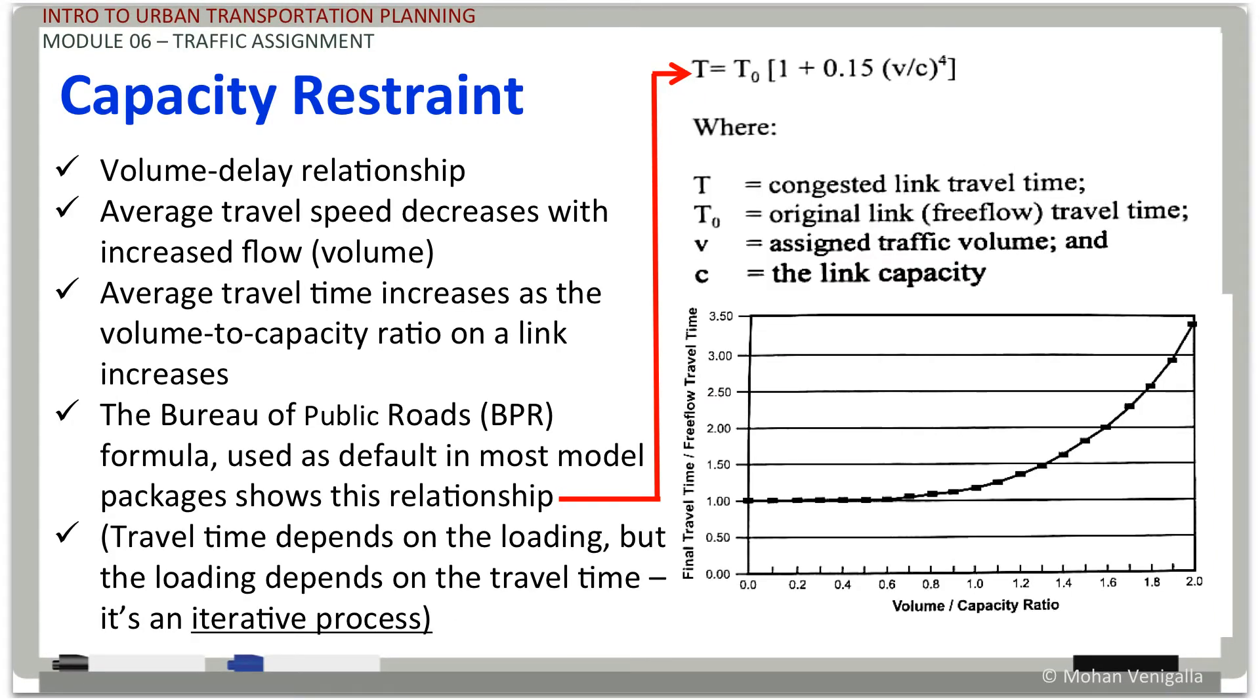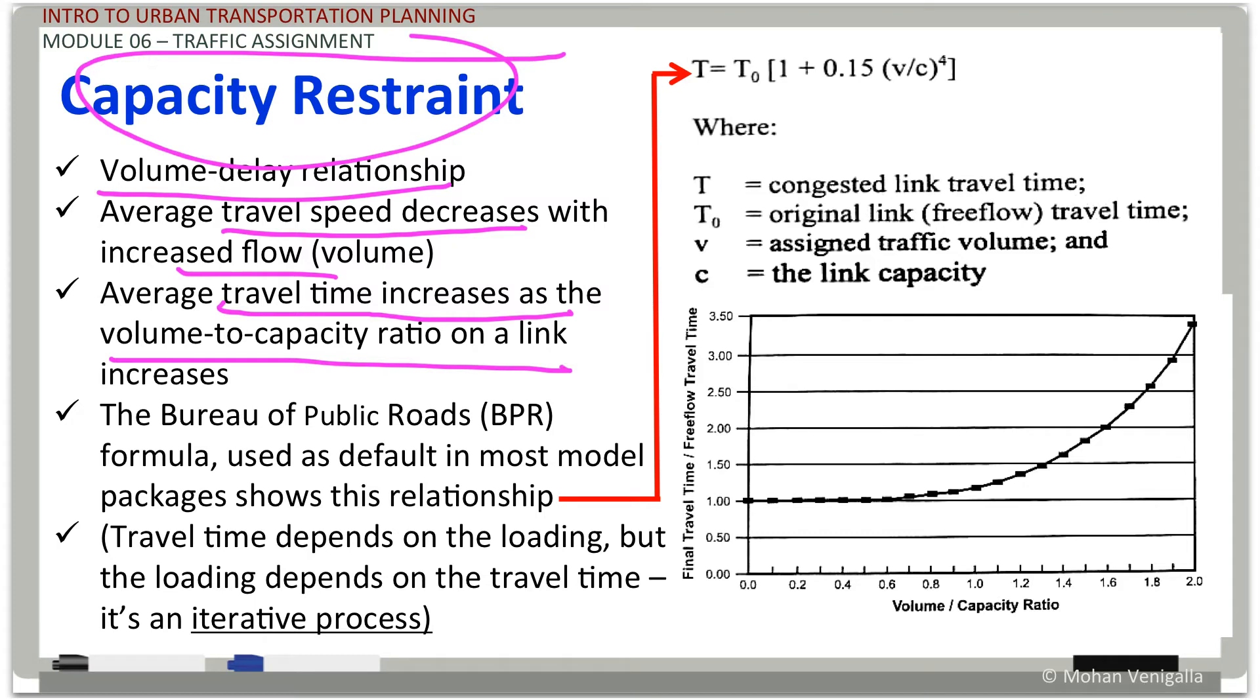That brings us to introduction of the term capacity restraint. Now, we just said volume delay relationship, or it's actually volume versus travel time relationship. Travel speed decreases with increase in flow, which increases travel time as the volume capacity ratio of the link increases.